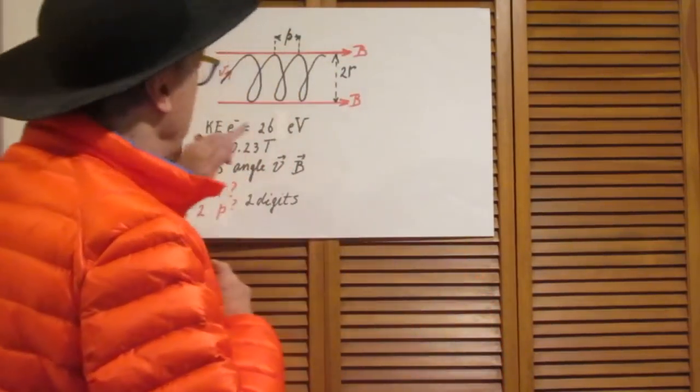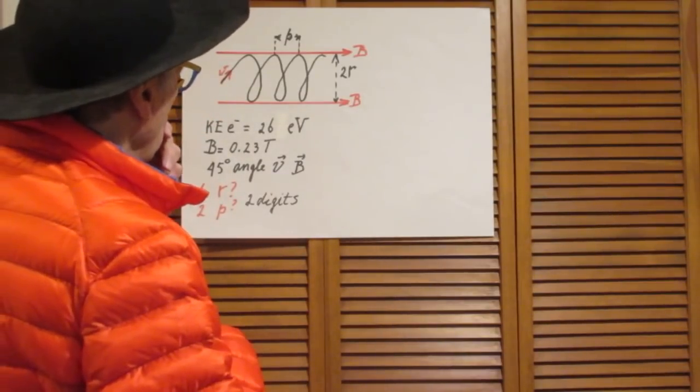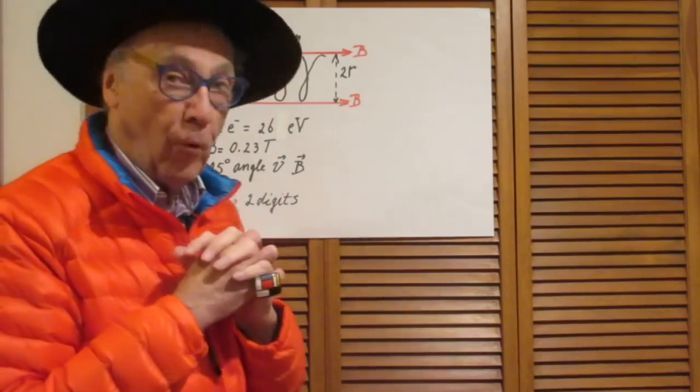So you see that here. That's the velocity. The kinetic energy of that electron is 26 electron volts.